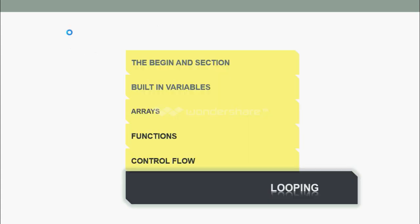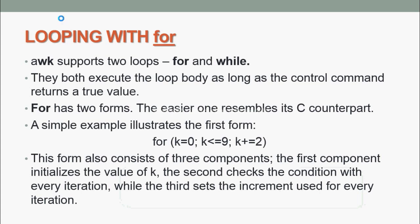Next, we are going to see looping. In looping, there are two types: looping with for and looping with while. We will see them one by one. First, looping with for. AWK supports two loops: for and while. They both execute the loop body as long as the control command returns a true value. For has two forms. The easier one resembles its C counterpart. A simple example illustrates the first form: for (k=0; k<=9; k+=2). This form consists of three components: the first initializes the value of k, the second checks the condition with every iteration, while the third sets the increment used for every iteration.